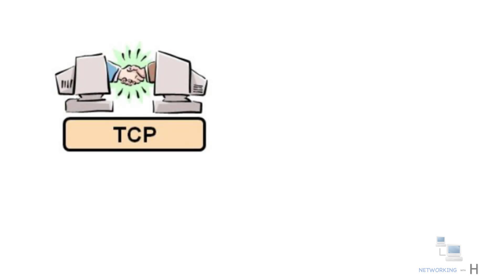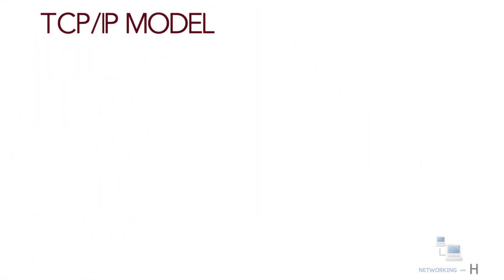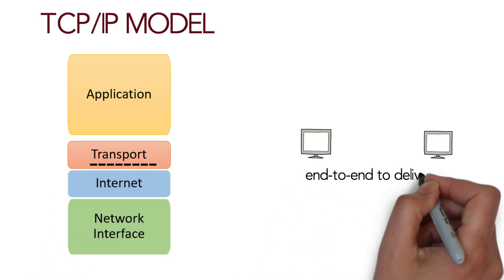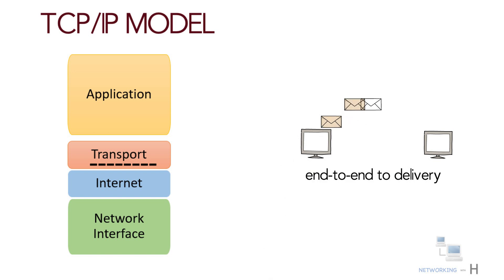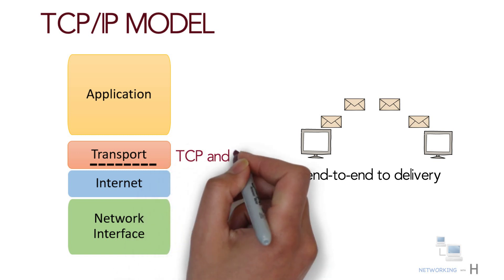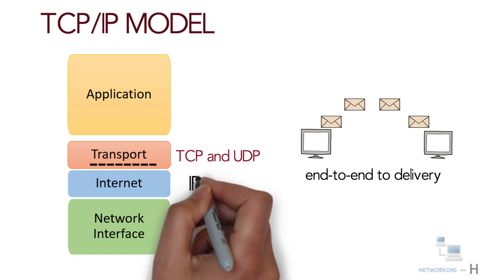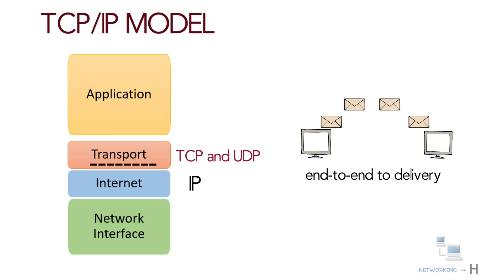Hello everyone. In this session of the CCNA series, we'll discuss TCP and UDP protocols. From the TCP/IP protocol suite, the transport layer is responsible for end-to-end delivery of data from the source host to the destination host. TCP and UDP are the two protocols that determine how data is exchanged over the internet, both built on top of the IP protocol. They share many similarities, but the differences make them suitable for different purposes, and they are the two most widely used protocols that internet users interact with every day.